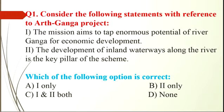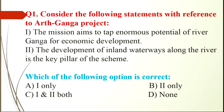Statement first is with reference to the Arth Ganga project. Statement 1: the mission aims to tap the enormous potential of river Ganga for economic development. Statement 2: the development of inland waterways along the river is the key pillar of the scheme. Both statement 1 and statement 2 are correct, so the option will be both.